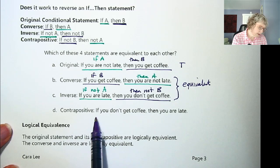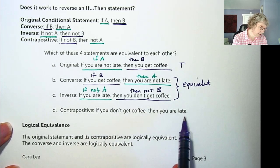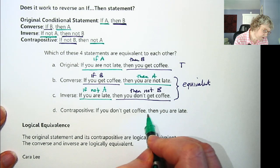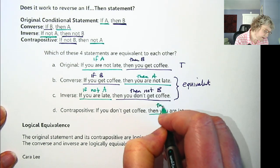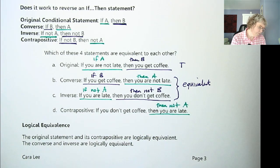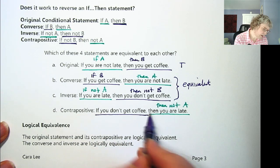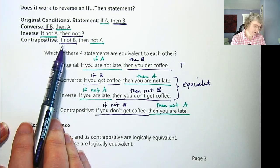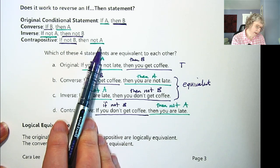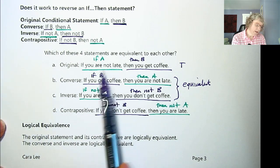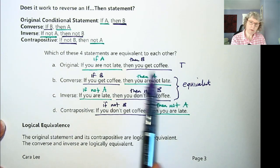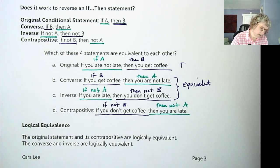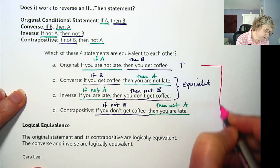Let's look at the contrapositive: if you don't get coffee, then you are late. Coffee was B, so this is if not B. And 'you are late' is not A. So if not B, then not A — that checks out as the contrapositive. If the original was true — as long as you're not late, you get coffee — then if you didn't get coffee, you were late. So the original and the contrapositive are equivalent to each other.